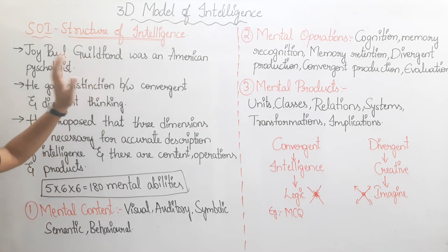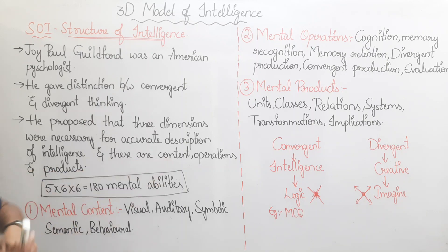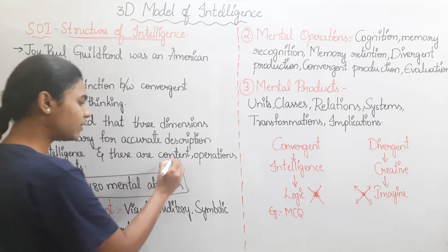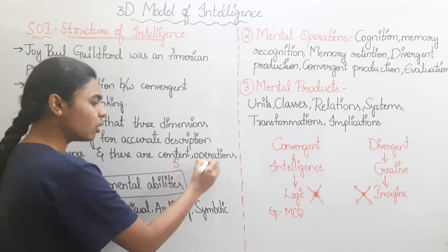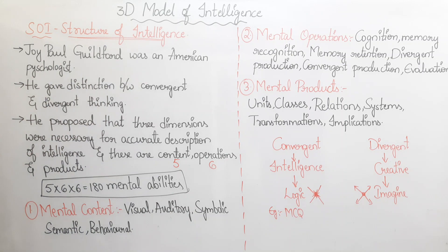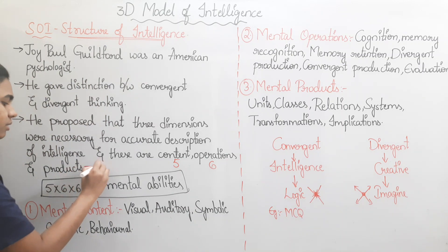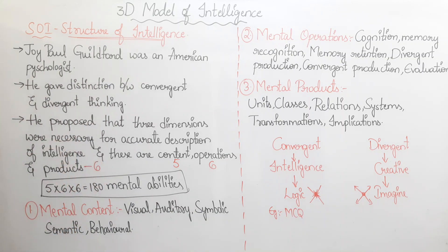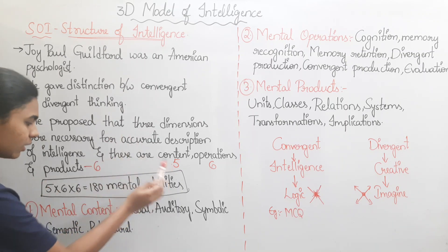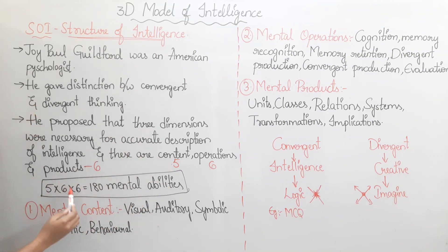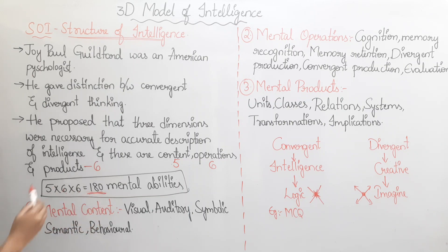Guilford proposed three dimensions: Content has five mental abilities, Operations has six mental abilities, and Products has six mental abilities. So the total is 5 × 6 × 6 = 180 mental abilities.